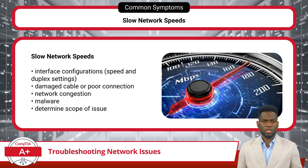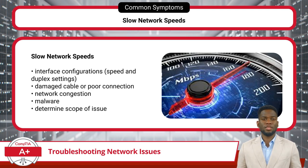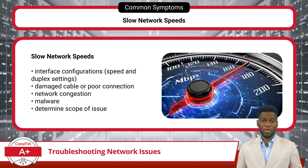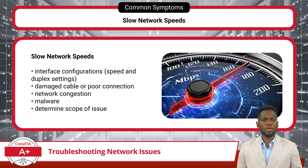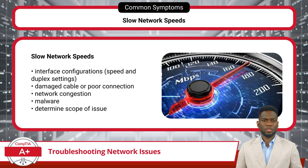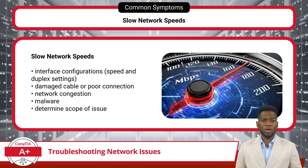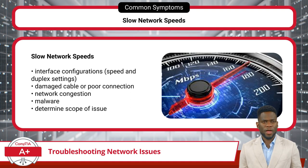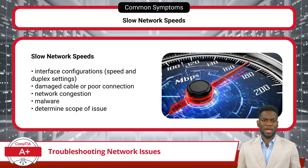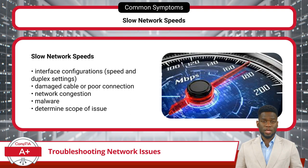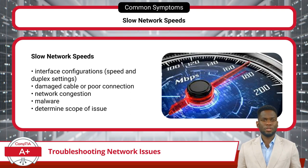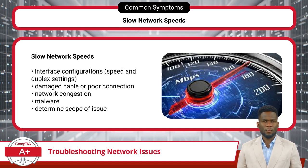Network congestion occurs when the volume of data traffic exceeds the network's capacity, leading to packet loss and slower transmission speeds. Identifying and addressing congestion points, such as overloaded switches or routers, can help alleviate slow network speeds. Malware infections on network devices can degrade network performance by consuming bandwidth or launching denial-of-service attacks. Regularly updating antivirus software and conducting network security audits can help detect and remove malware, ensuring optimal network performance.